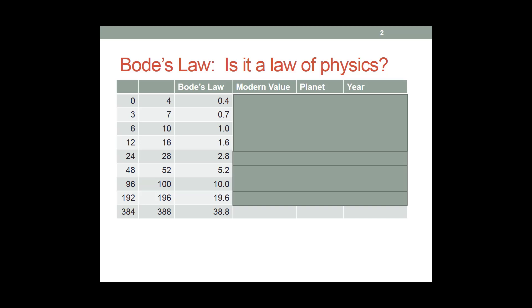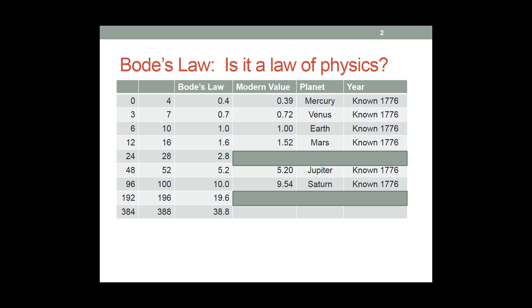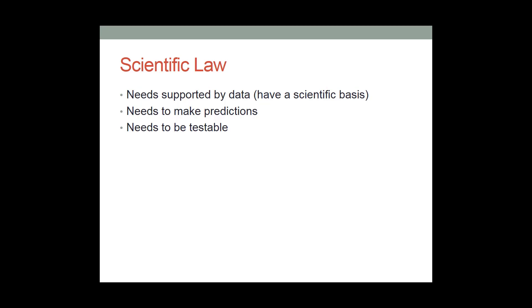Remember, I'm not going to ask you specifics over this information. So for example, I will never ask you what the modern value for Saturn's orbital radius is in astronomical units. What I am going to ask you to know over this material is these three criteria: what does it take to be a scientific law and to be able to think about other scenarios and defend whether they're a scientific law or not?